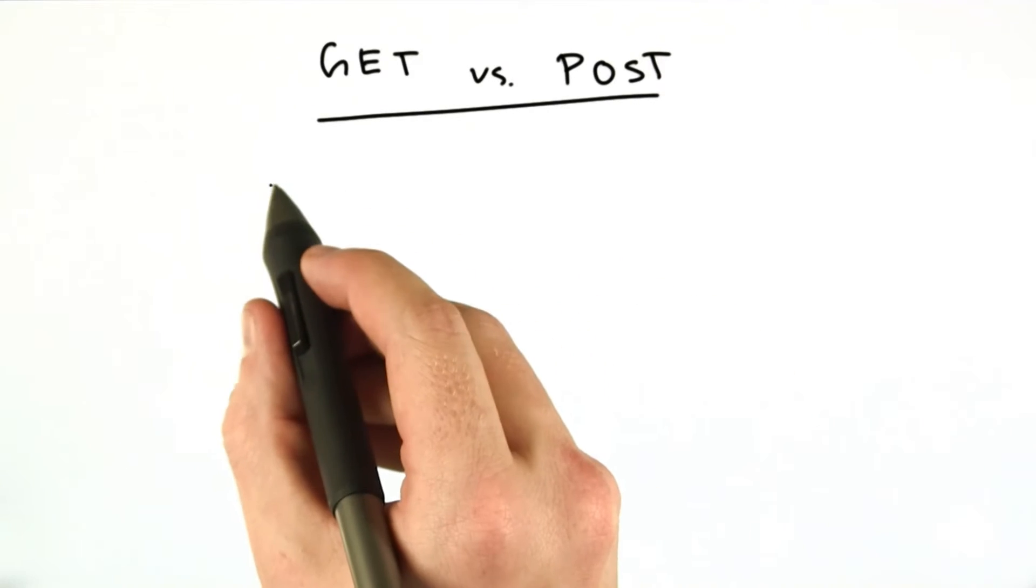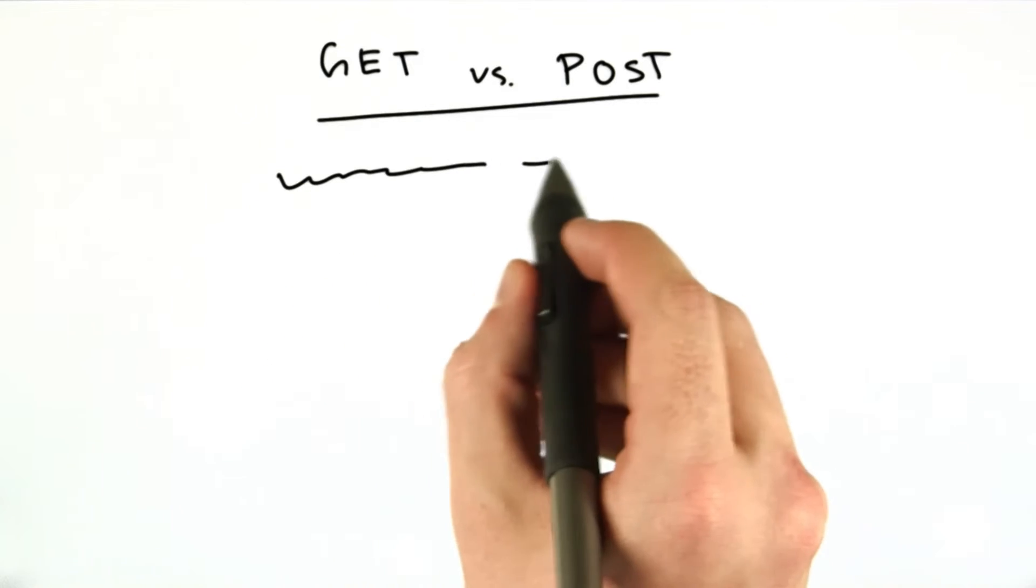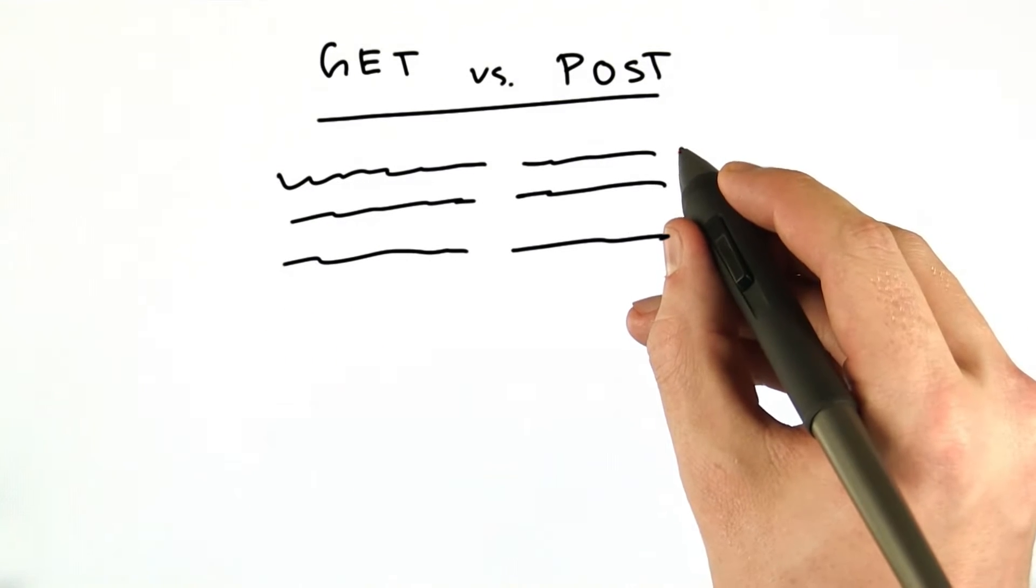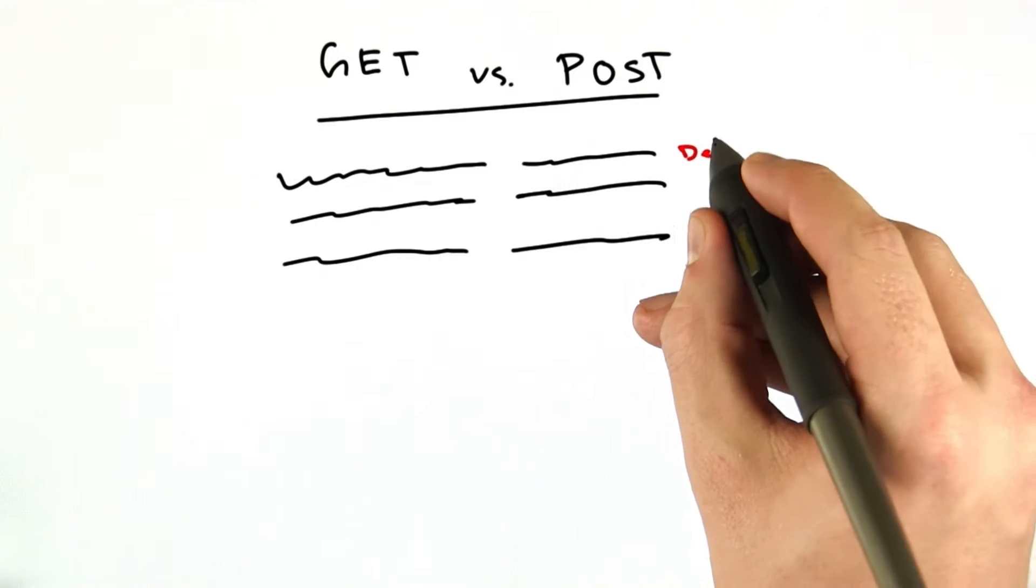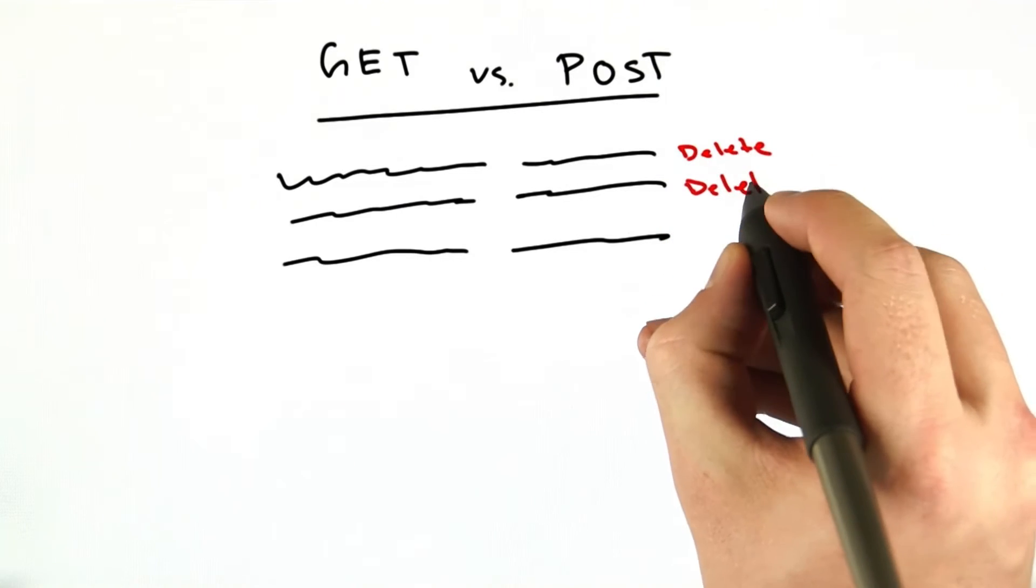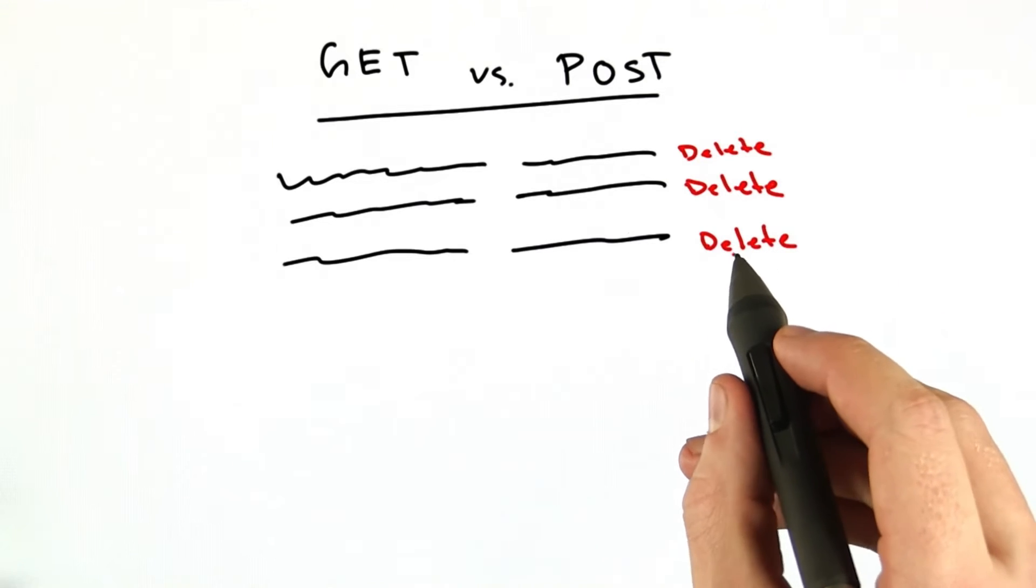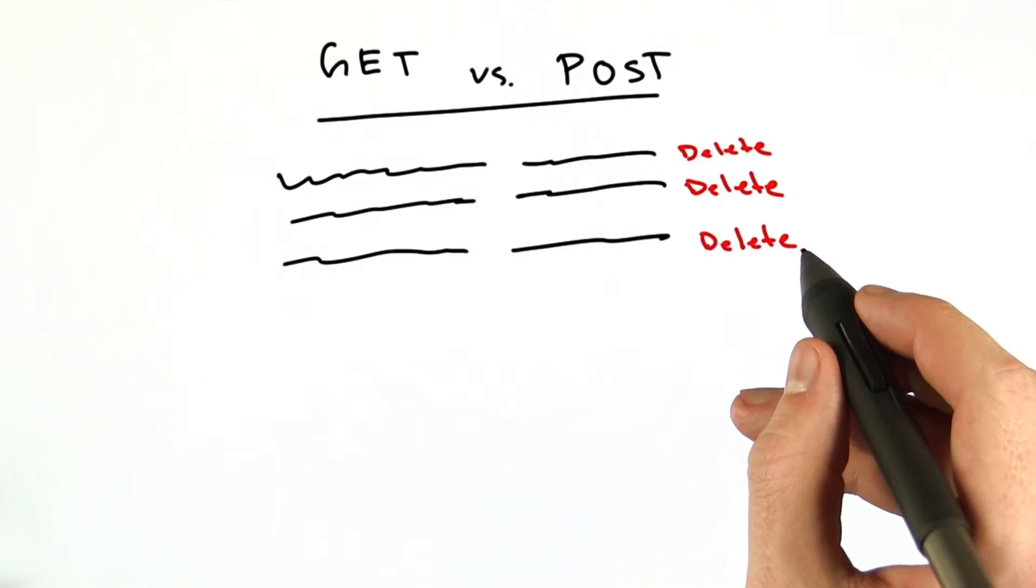And so the page kind of looked like this. You had these to-do items, and next to each of these to-do items was a little link that said Delete. And this was just a link. And if you recall, normal links with the anchor tag that you would see and click on, those make GET requests.